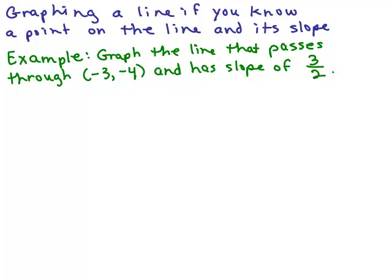In this video, we'll go over how to graph a line if you know a point on the line and its slope. For example, graph the line that passes through the point negative 3, negative 4 and has a slope of 3 halves.